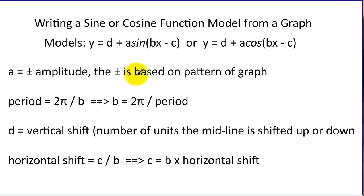On sine functions, if we start at the midline and go up, a is positive. If we start at the midline and go down, it's negative. For cosine, if the function starts high, it's positive, and if it starts low, it'll be negative.